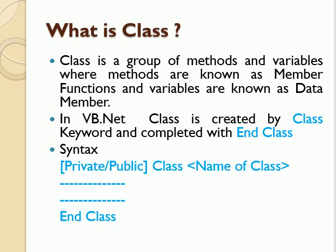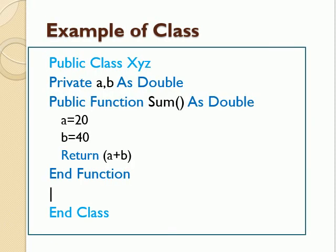The first concept of OOPs-based programming is the concept of class. A class is a group of methods and variables, where methods are known as member functions and variables are known as data members. In VB.net, a class is created by the class keyword and completed with the end class keyword. The syntax is: public or private, class keyword, class name, followed by the variables and methods to use, and it completes with end class.